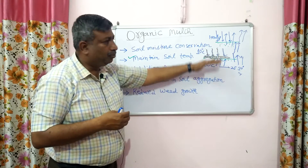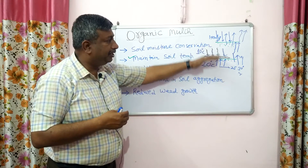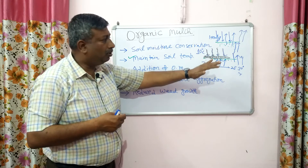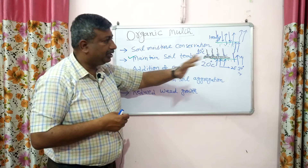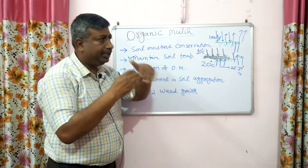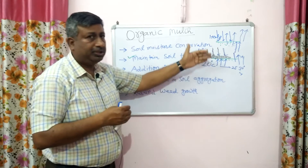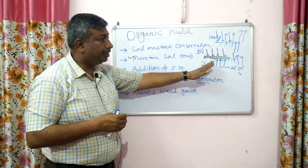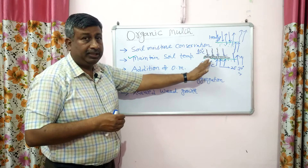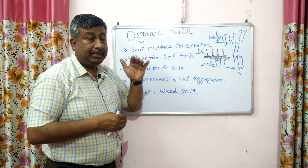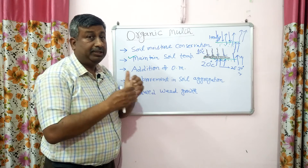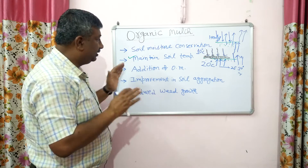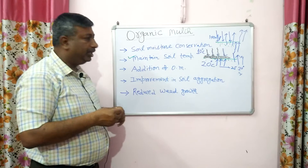In the root zone, temperature is maintained so there are no major changes or great fluctuations in root zone temperature. This is the property of organic residue — they act as an insulator. This is the reason for maintenance of soil temperature.